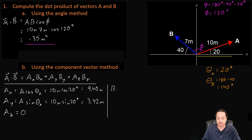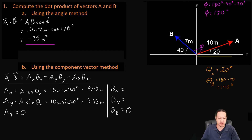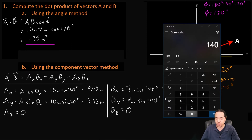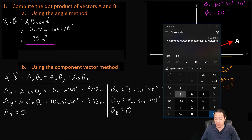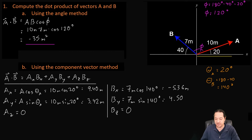Now let's do our B components: B sub X, B sub Y, and B sub Z. B sub Z is going to be zero because vector B is in the XY plane. B sub X is going to be 7 meters times the cosine of theta B, which is 140 degrees. B sub Y is going to be 7 meters times the sine of theta B, which is 140 degrees. Cosine of 140 degrees times 7 gives us negative 5.36 meters. Sine of 140 degrees times 7 gives us 4.50 meters.